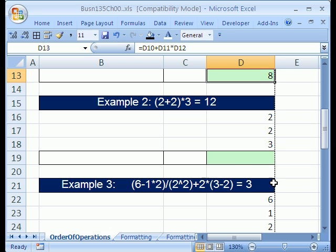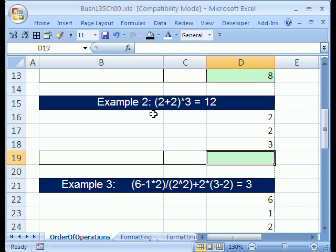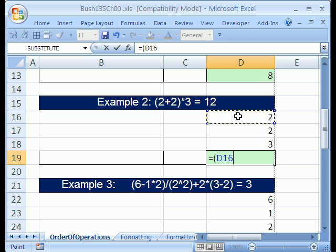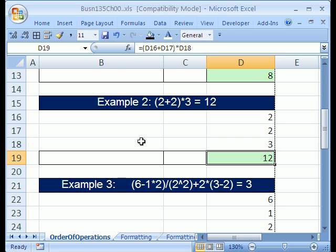Let's do another example. Now, let's force the issue with parentheses. We want to do the adding first. And in this case, we'll get 12. So, equals in parentheses 2 plus 2, close parentheses, times 3. And when we hit Control-Enter, we get 12.